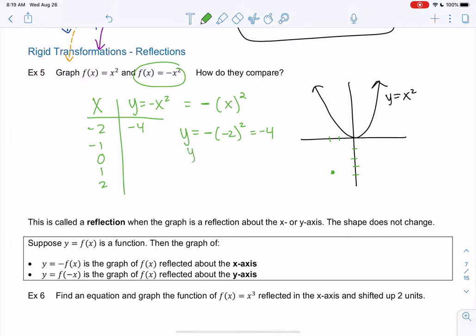For a negative 1, there's a negative outside. Negative 1 squared is positive 1, and then negative on the outside, negative 1. So negative 1, 1.